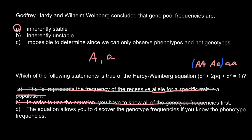We are left with the only correct answer, which is C: the equation allows you to discover the genotype frequencies if you know the phenotype frequencies. This is true — if we know that the homozygous recessive genotype represents, for example, 10% of the population, then the other two genotypes represent one phenotype at 90% of the population frequency. Using the Hardy-Weinberg formula, we can also predict the expected genotype frequencies of the homozygous dominant and heterozygous genotypes separately. So the correct answer is C.